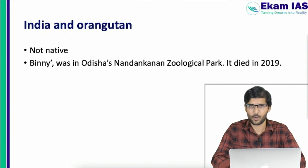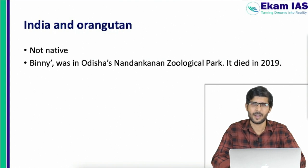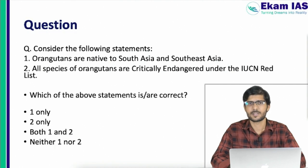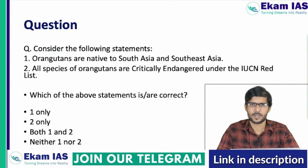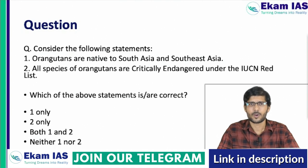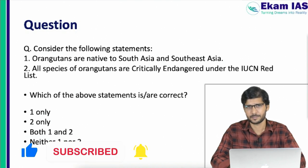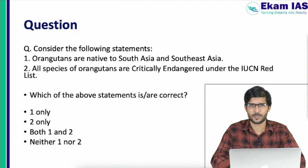In this short module, we studied Orangutans' key features, habitat, conservation status, and connection to India. Consider the following practice question: Statement 1 — Orangutans are native to South Asia and Southeast Asia. Statement 2 — All species of Orangutans are critically endangered under the IUCN Red List. Which of the above statements are correct? You can answer in the comments below and access detailed material in the PDA format via the Telegram channel link in the description. Thanks for watching and all the best for the 2023 UPSC prelims.